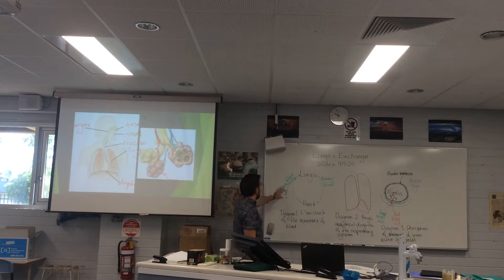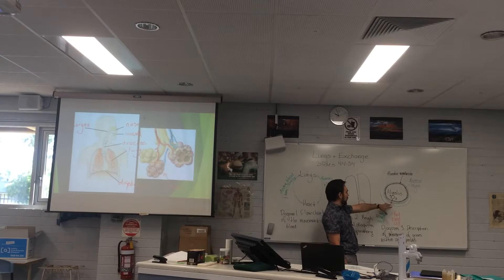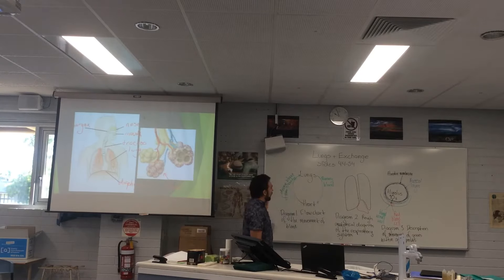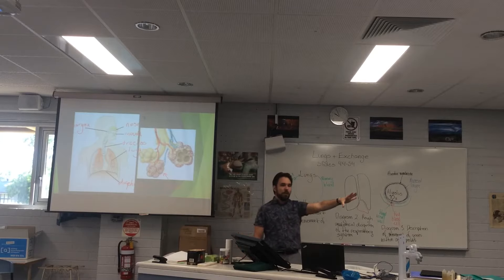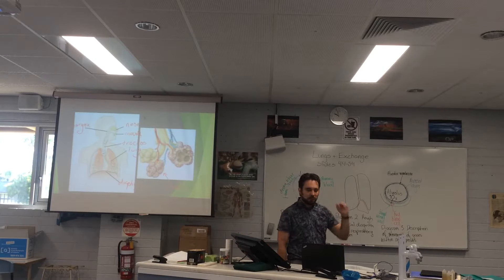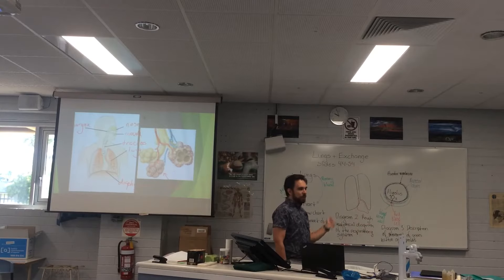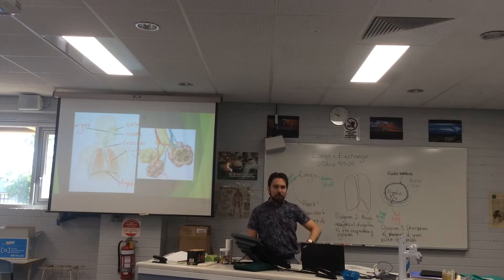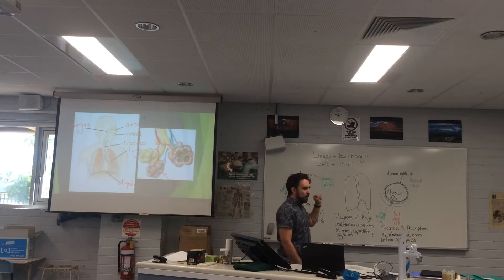Here we have our flow diagram. Deoxygenated blood comes up from the heart into the lungs — this is our deoxygenated red blood cell. It gets oxygenated as the oxygen moves across those four membranes. It then moves back as reoxygenated blood into the heart to be pushed out to the rest of the body. Every heartbeat, blood is moving up from the heart into the lungs, gets reoxygenated, and the heart beats again to push that oxygenated blood back out.